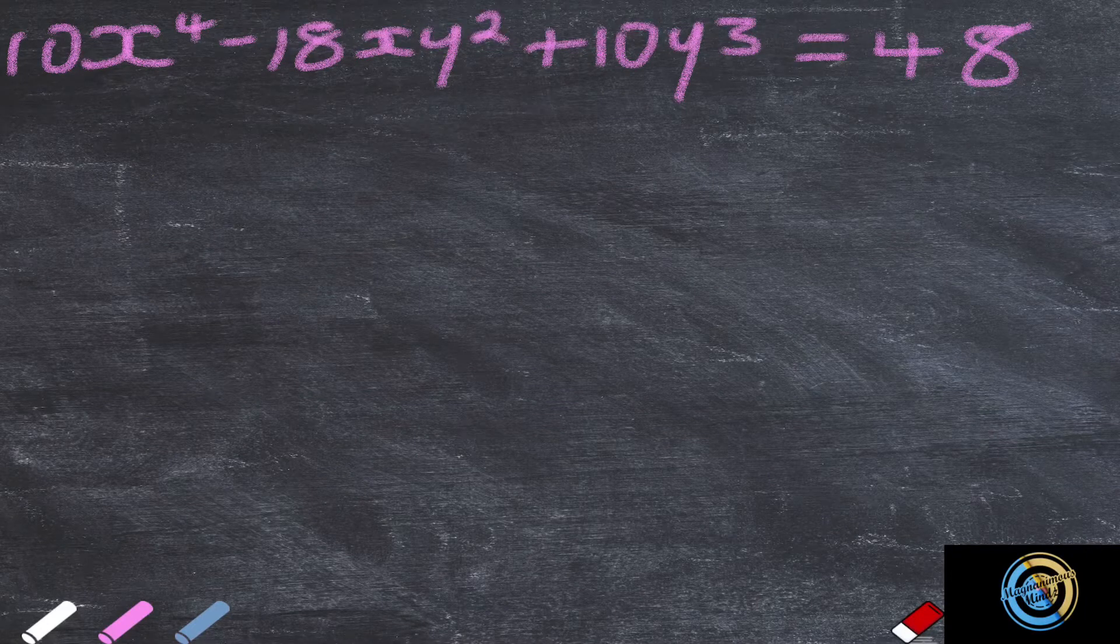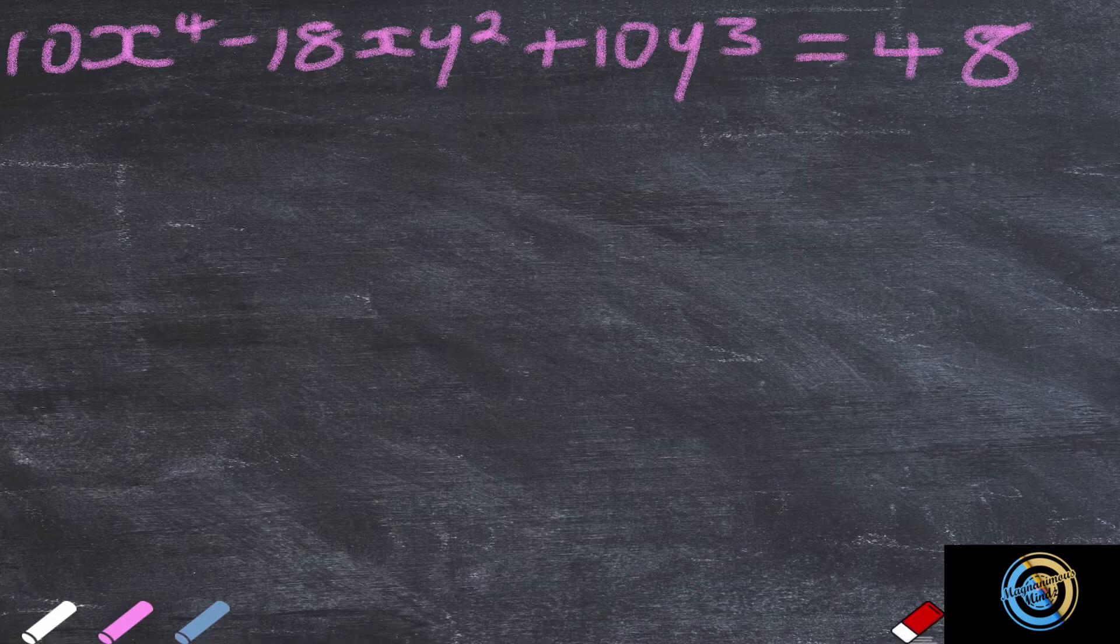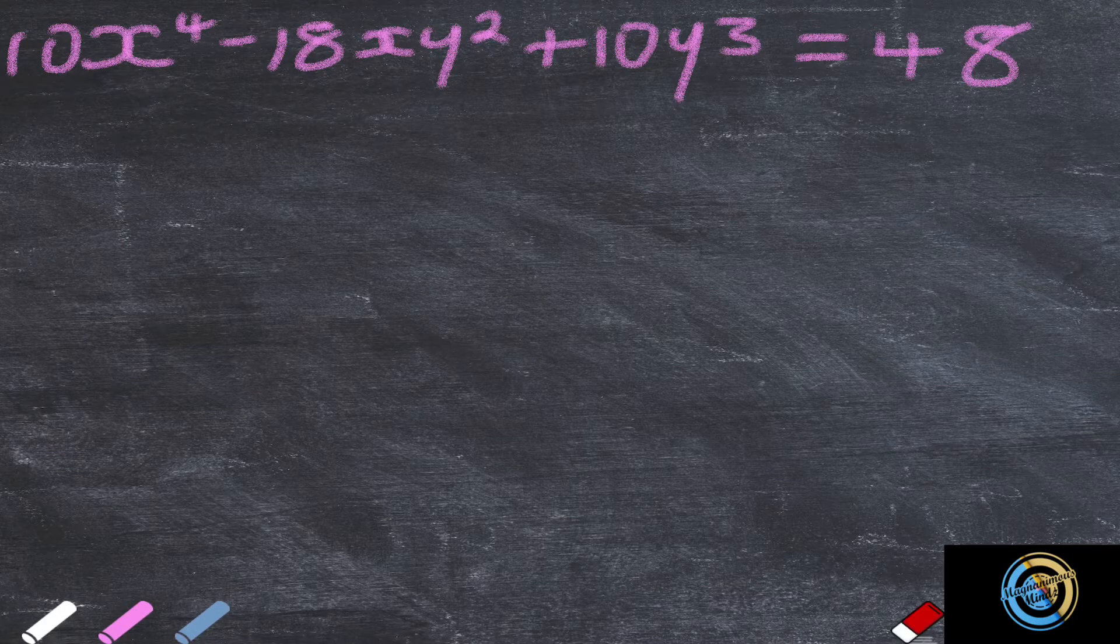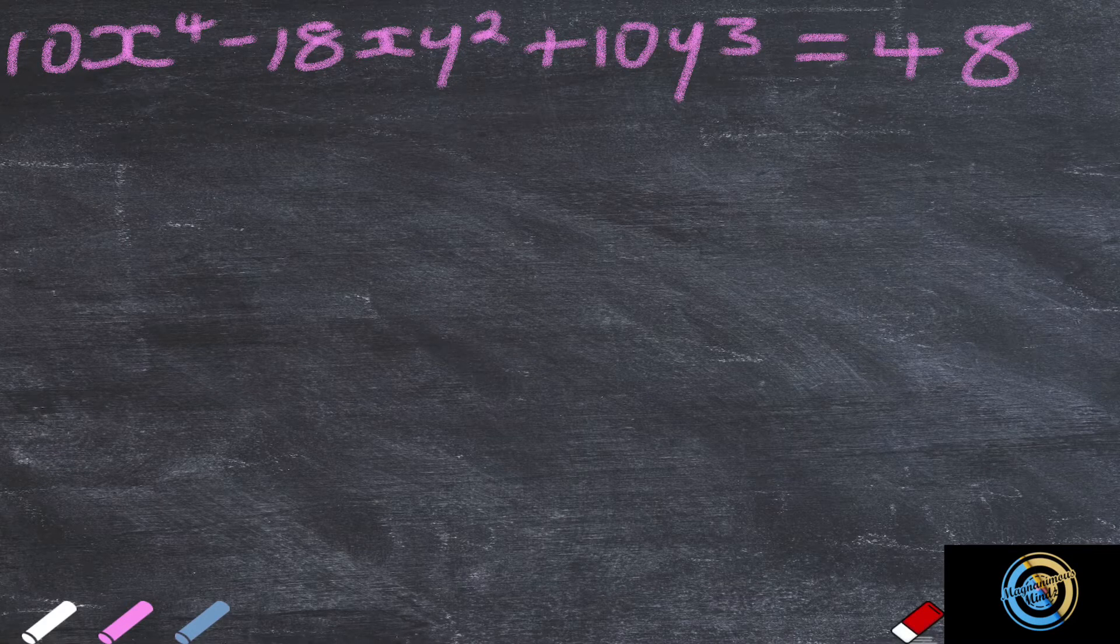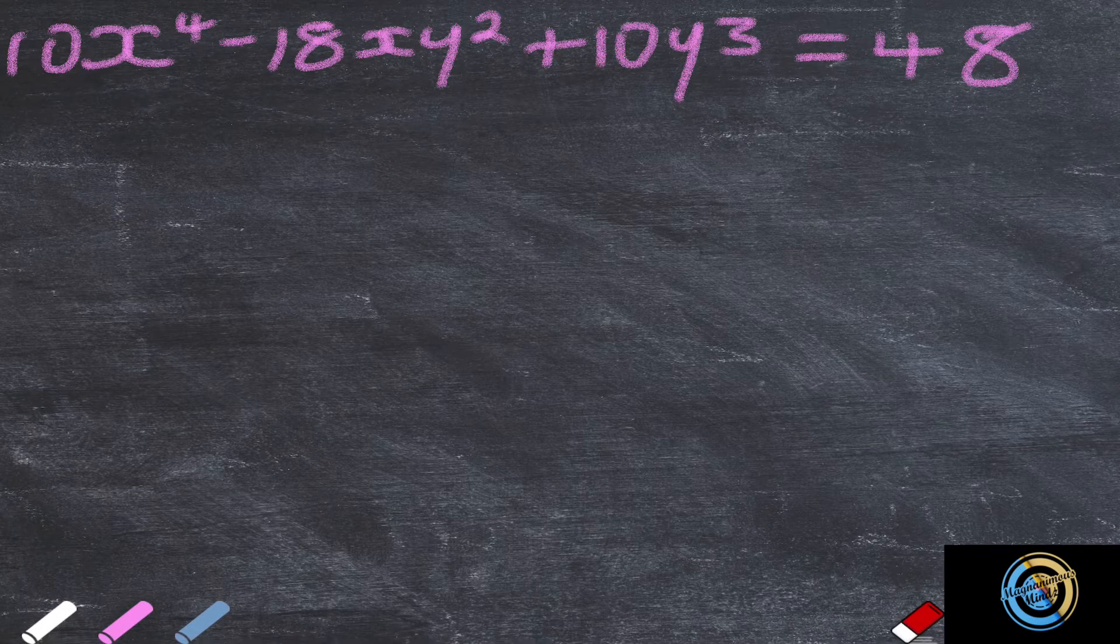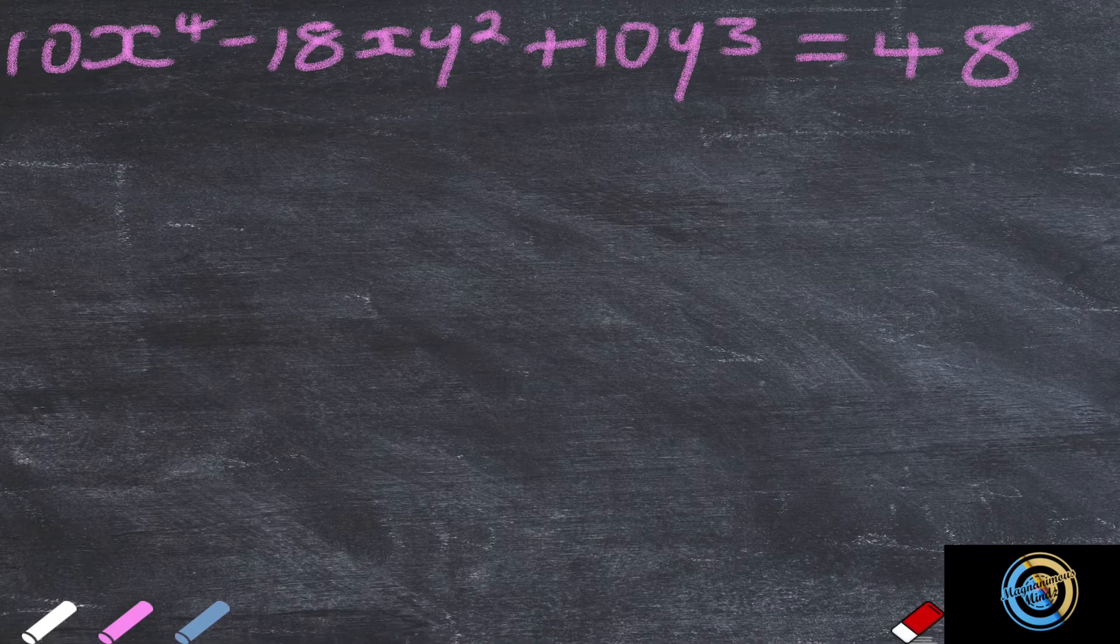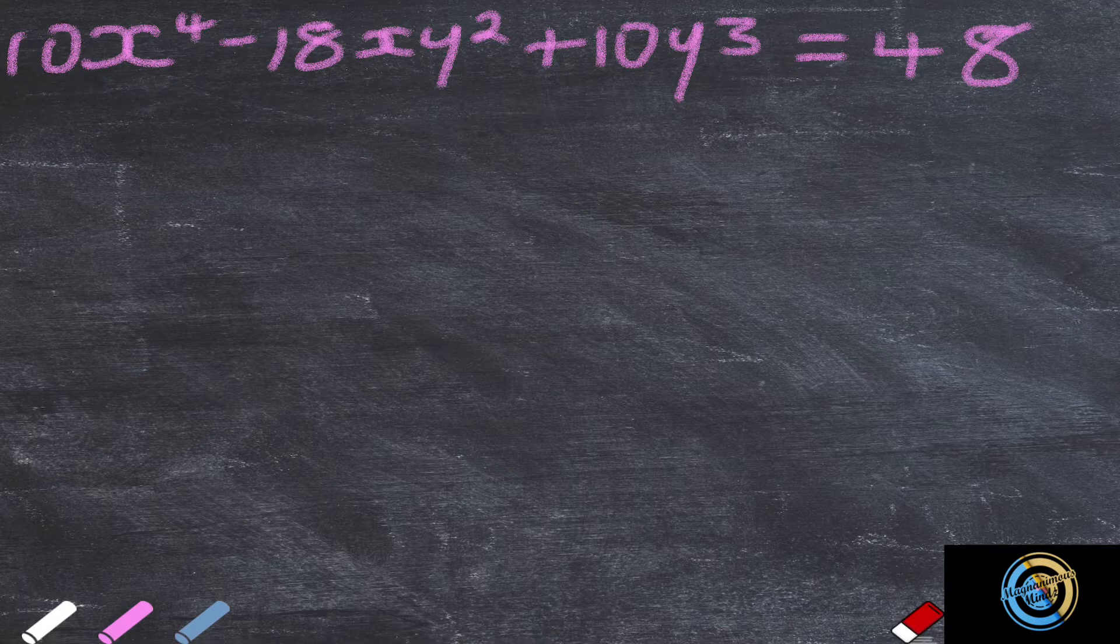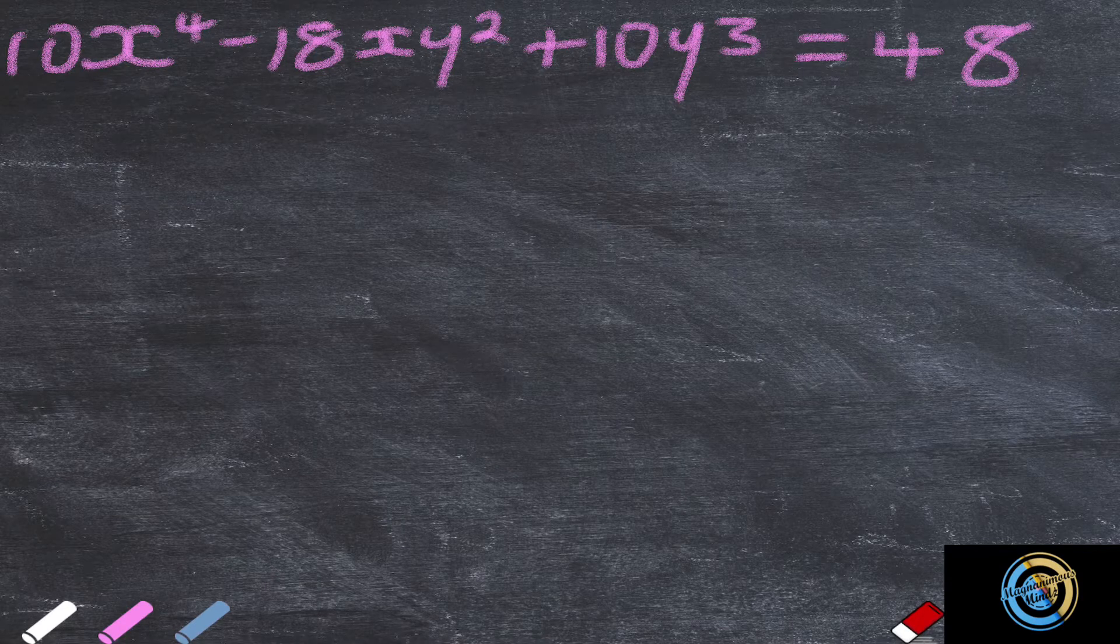Greetings guys, this is Magnanimous Minds Lectures Online. Today we continue with mathematics and further differentiation, and now we look into implicit differentiation. We know that implicit differentiation is whereby you differentiate with respect to both variables x and y.